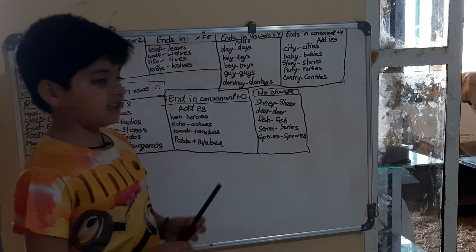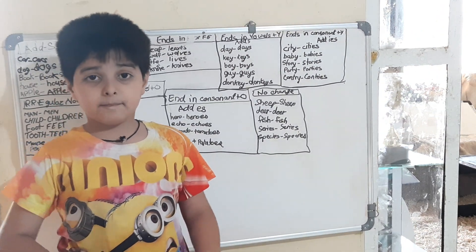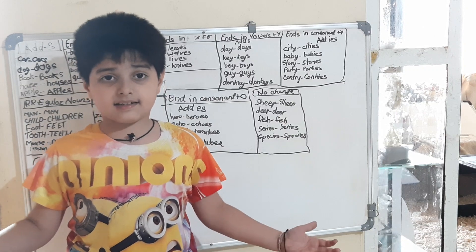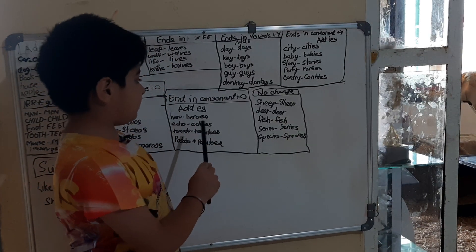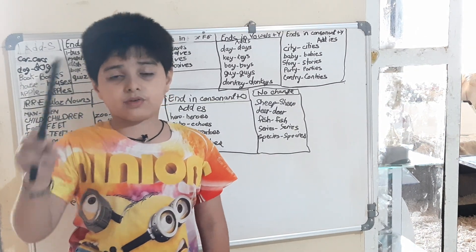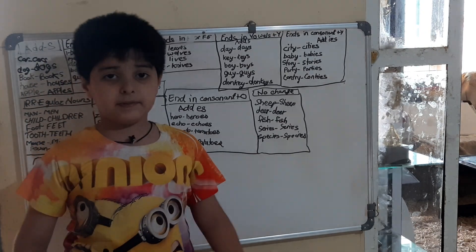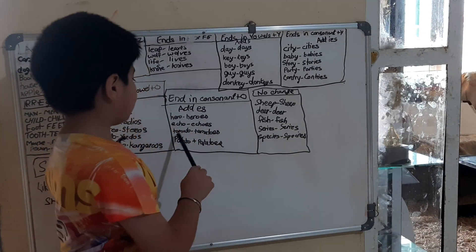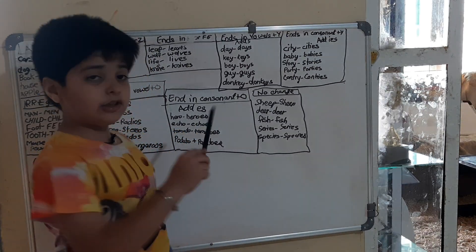We are doing ending in consonant plus O — before O it should be a consonant — and we will add ES. Let's take an example: hero becomes heroes, tomato becomes tomatoes, potato becomes potatoes.